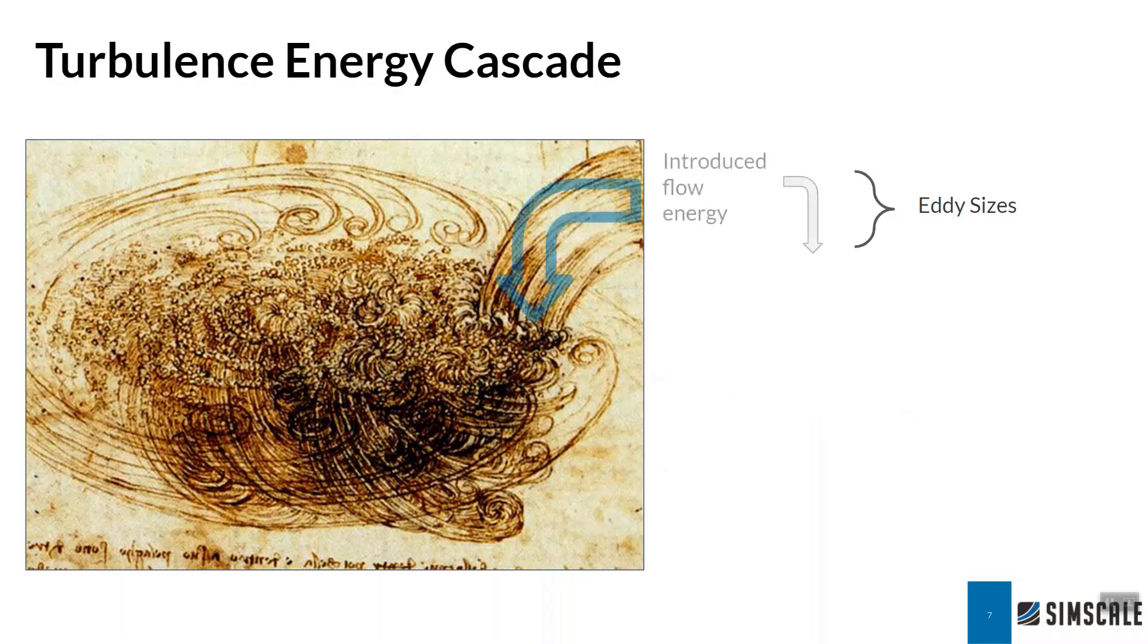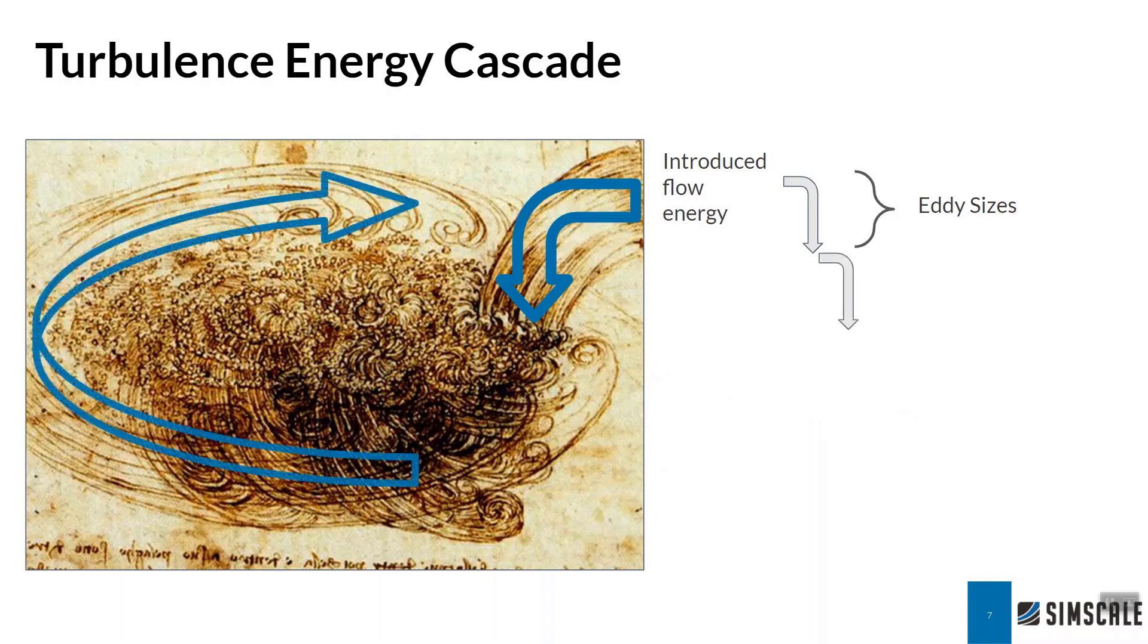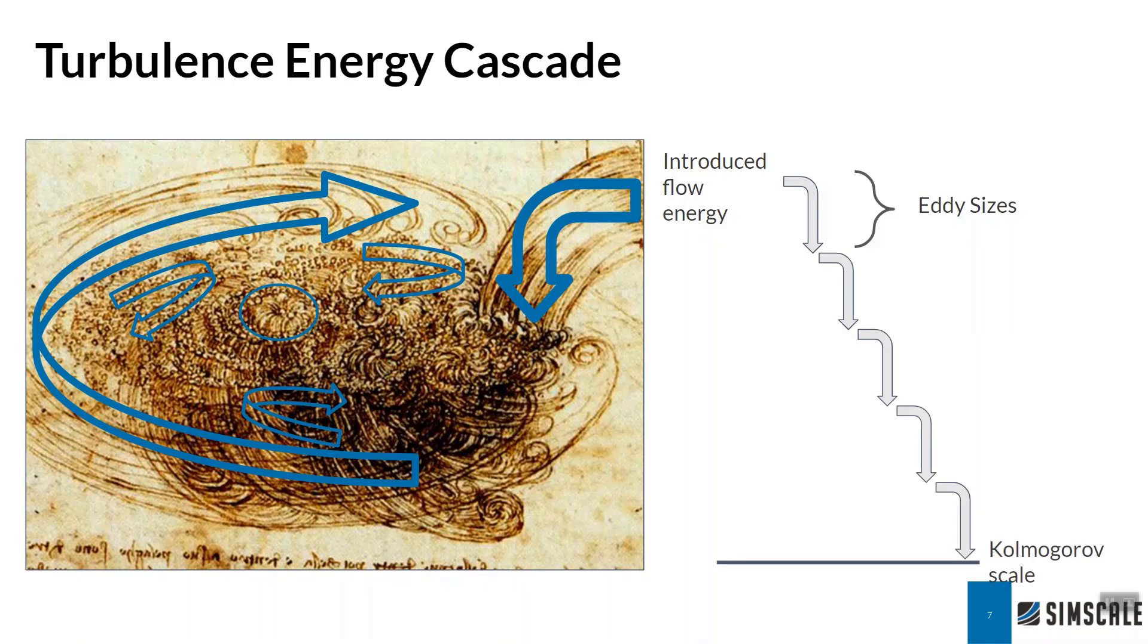Now, taking a deeper look at turbulence, as flow is introduced, it introduces energy to the system. Typically, this results in chaotic energy in swirls or eddies. But as those swirls tumble through the system, they typically break down into smaller and smaller eddies, until we reach some level where the eddies are so small that they actually dissipate directly into thermal energy. And this is what we call the Kolmogorov scale.